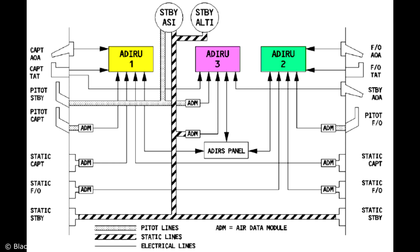Notice that the standby airspeed and the standby altimeter are not connected to an ADIRU but get their source directly from the probes. This means that even if all three ADIRUs fail, you will still have standby airspeed and altitude indications shown on the ESIS, as long as you have valid information coming from the related probes.